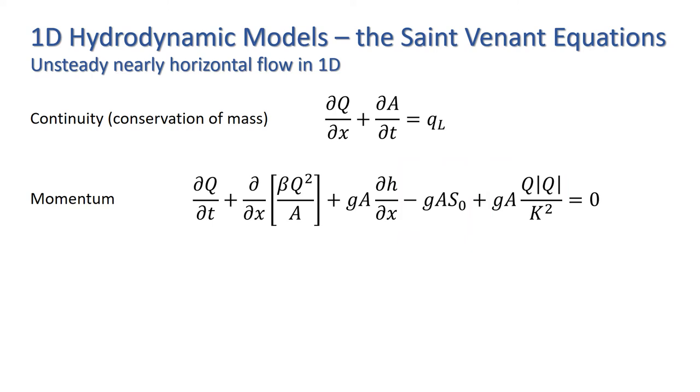In order to run a simulation, i.e. define a problem, we need an initial condition. For example, a known discharge and depth along the domain length at time t equals 0. And two boundary conditions.